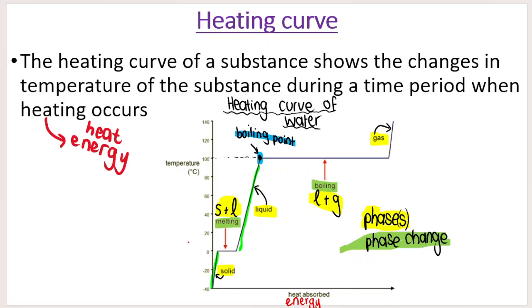If you look at the curve, we'll discuss the axes and heading in a second, but you can see this is a measure of temperature as time goes on. Sometimes the temperature isn't increasing — you can see the flat parts of the graph where temperature is not increasing, but as time goes on, I'm still adding heat to the substance. Another thing measured on this axis is time, most commonly in seconds or minutes on the x-axis, and temperature on the y-axis.